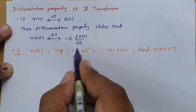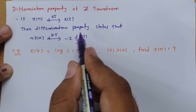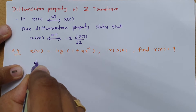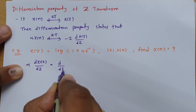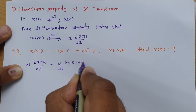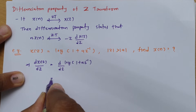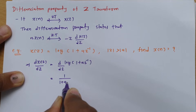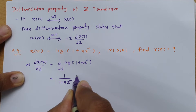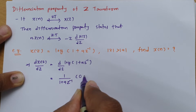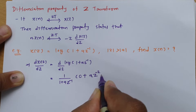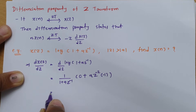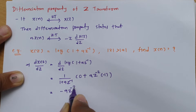Since X(z) is given, I will first try to express it in the differentiation form. Taking dX(z)/dz, that is the differentiation of log(1 + az⁻¹). The derivative is 1/(1 + az⁻¹) times the derivative of the inner part. Since A is constant, the derivative of z⁻¹ is -z⁻², giving us -az⁻² divided by (1 + az⁻¹).